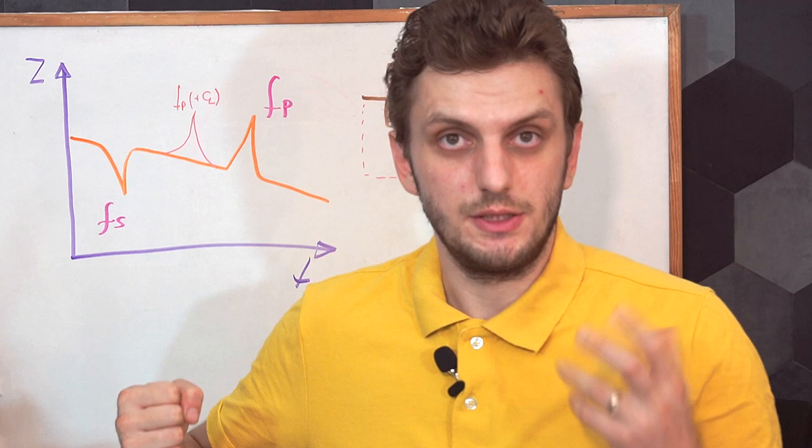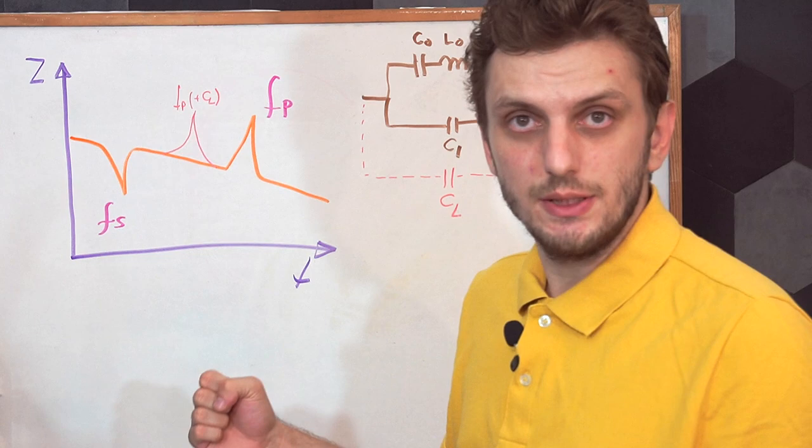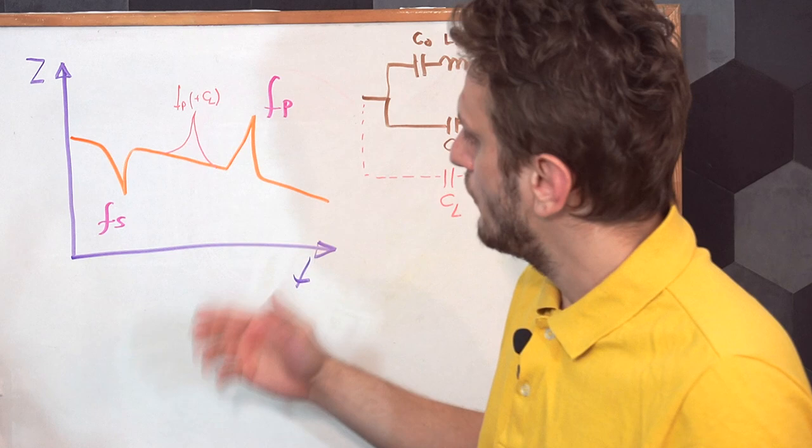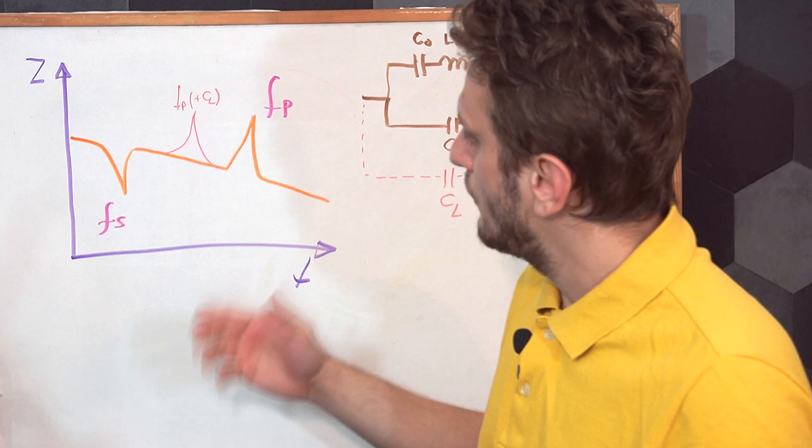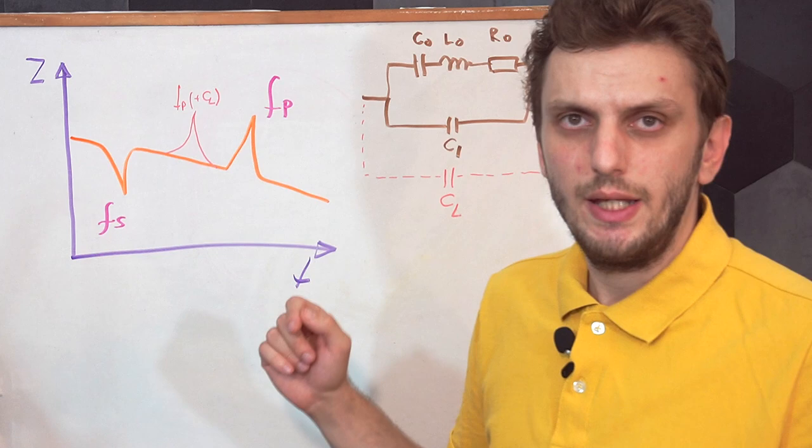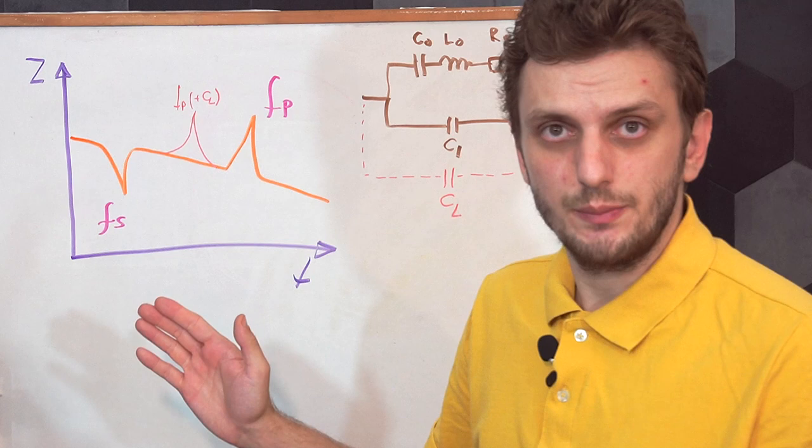What I have here is a graph of the quartz crystal's impedance, and we have our two resonance points: series resonance and parallel. The series resonance frequency is defined by our serial RLC circuit—the motional capacitance, motional inductance, motional resistance—and there's not much we can do about this, so this frequency is usually fixed.